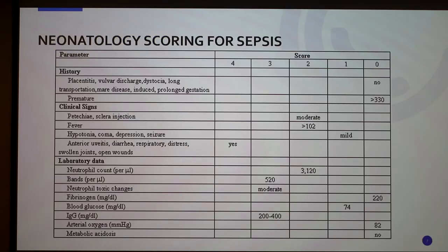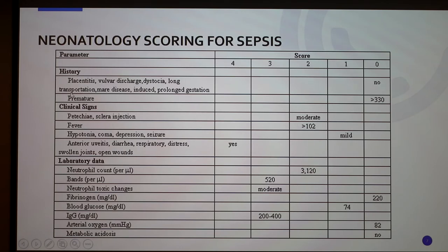There is a scoring sheet that can be used after a foal is born if sepsis is suspected, to determine whether it is or not. First they look at the history — more about the gestation and what they saw in the mother — and look for specific symptoms, rating them on a scale of zero to four. They'll also add points if the foal was born premature. Then they look at clinical signs of the foal itself: petechiae, which are small bruisings or red circles on the skin, as well as fever and hypotonia, which is muscle weakness.